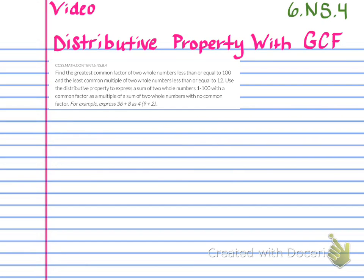Now we're going to look at the standard itself. The standard is talking about greatest common factor and least common multiple, which we've already discussed. Now we're going to talk about what we'll use today. I'm going to use colors, so you should too, and I want you to write in these different colors. It doesn't matter which color you use — you just want to be able to differentiate between the different pieces.